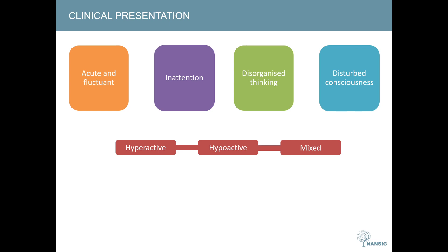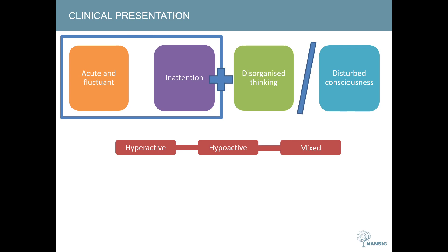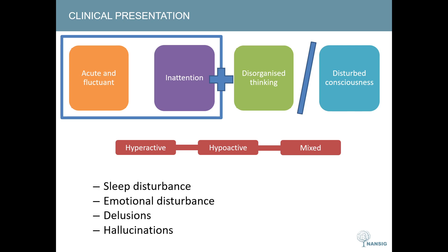These three terms — hyperactive, hypoactive, and mixed — describe the three main clinical classifications of delirium. For diagnosis, you can use the Confusion Assessment Method, which combines the first two features — acute onset and inattention — with one of either disorganized thinking or disturbed consciousness. Additional symptoms include sleep disturbance, emotional disturbance such as anxiety or depression, and changes in perception such as delusions or hallucinations.